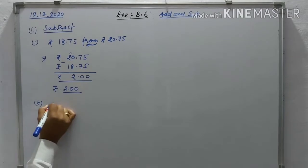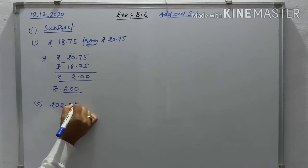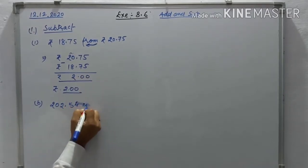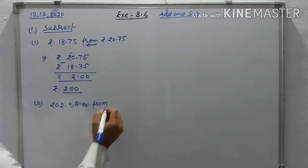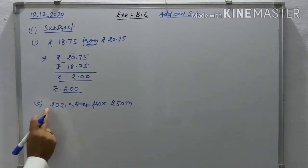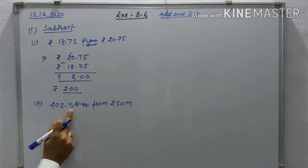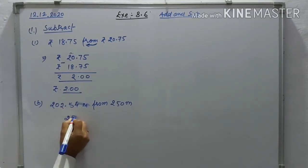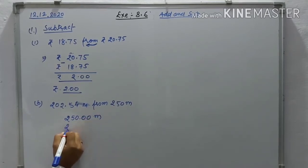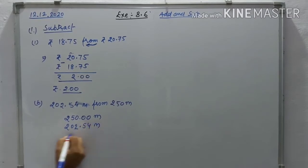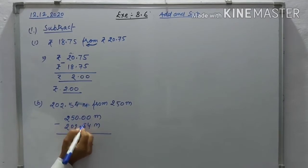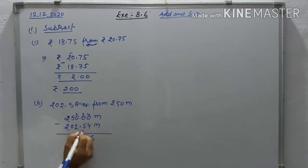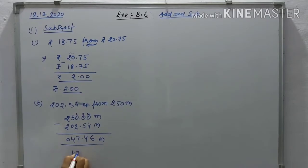Question (b): subtract 212.54 m from 250 m. Write 250.00 minus 212.54. Carry forward: 10 minus 4 is 6, 9 minus 5 is 4, then 7, 4 — the answer is 47.46 meters after subtraction.